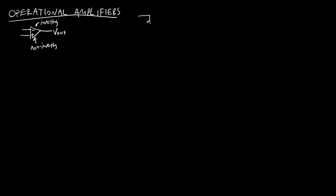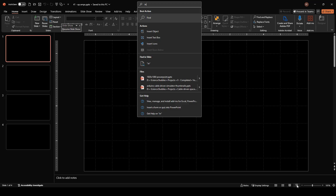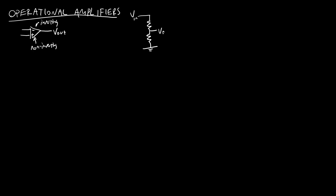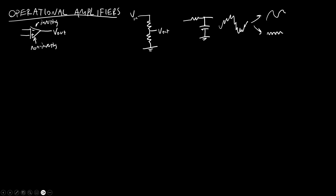So far in this series we have seen circuits like a voltage divider made from two resistors, where we have V_in and V_out. As the name implies, this lets us divide or decrease a voltage. We've also seen high and low pass filters where we can take a noisy signal and choose a filter to remove high or low frequency components. But in any of these cases, we cannot amplify the voltage — we can only decrease it.